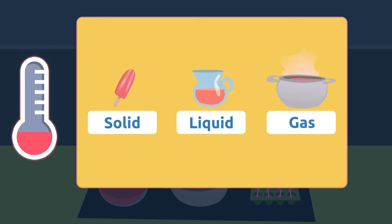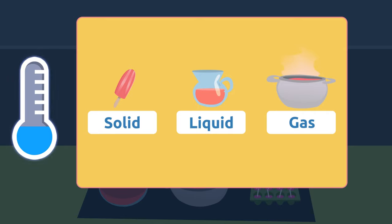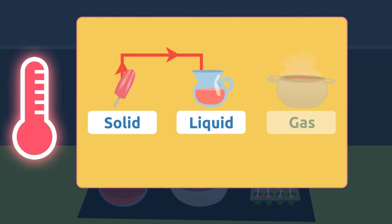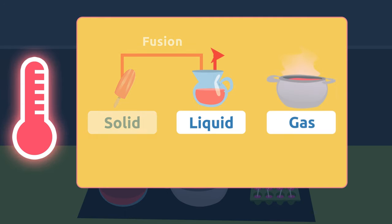A change in state happens when we heat or cool matter. If we heat solid matter, it becomes a liquid — we call this process fusion. If we heat liquid matter, it becomes a gas — we call this process vaporization.